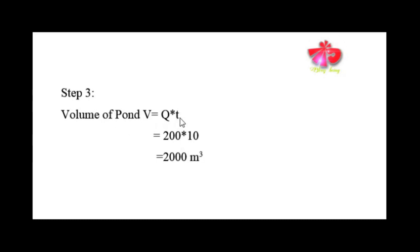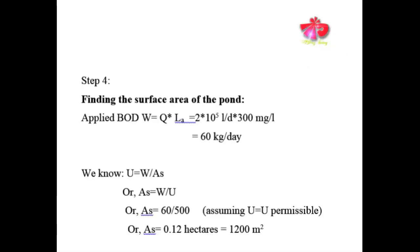Volume V = Q × t = 200 cubic meters per day × 10 days = 2000 cubic meters. The units of day cancel out, giving the volume of the oxidation pond as 2000 m³.